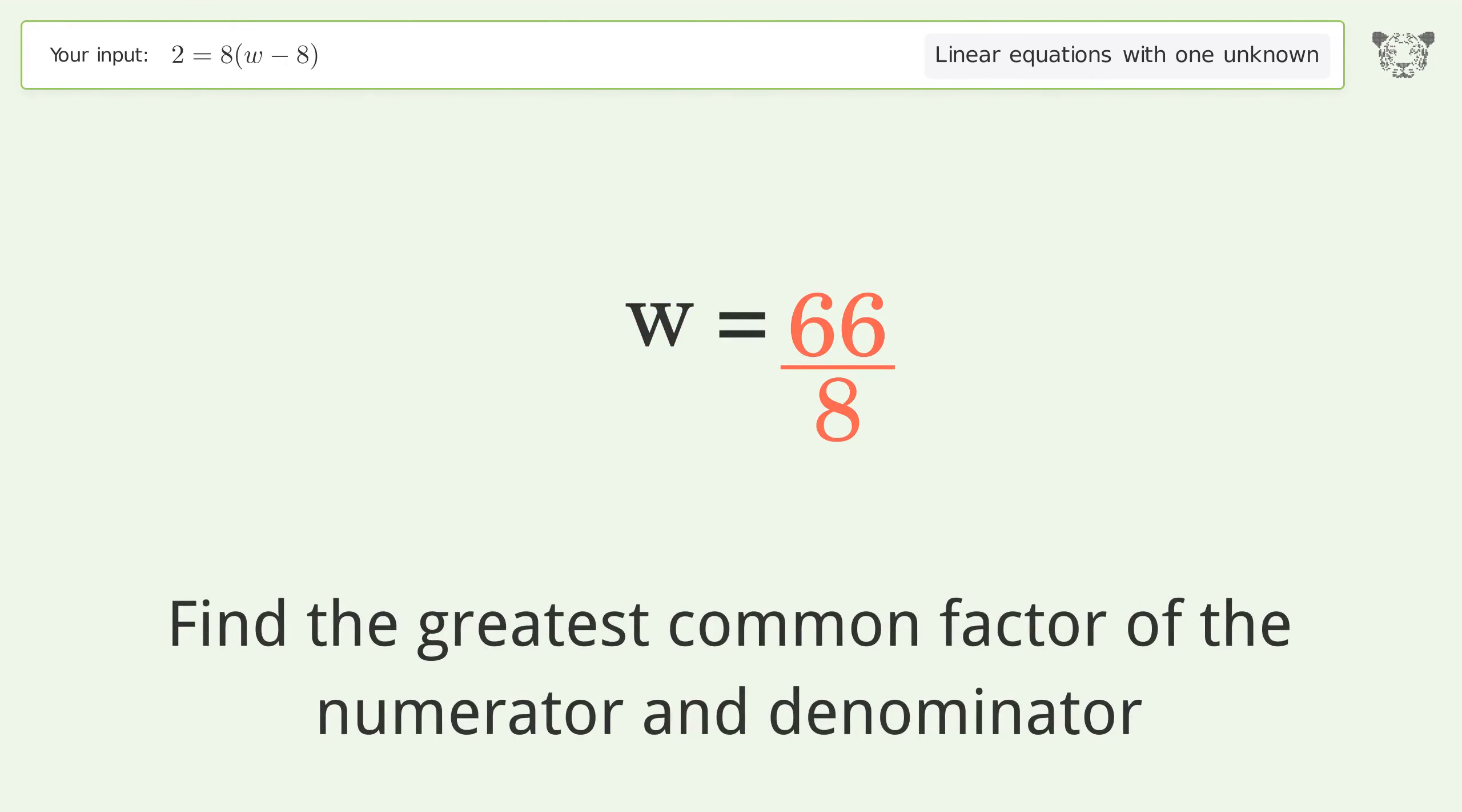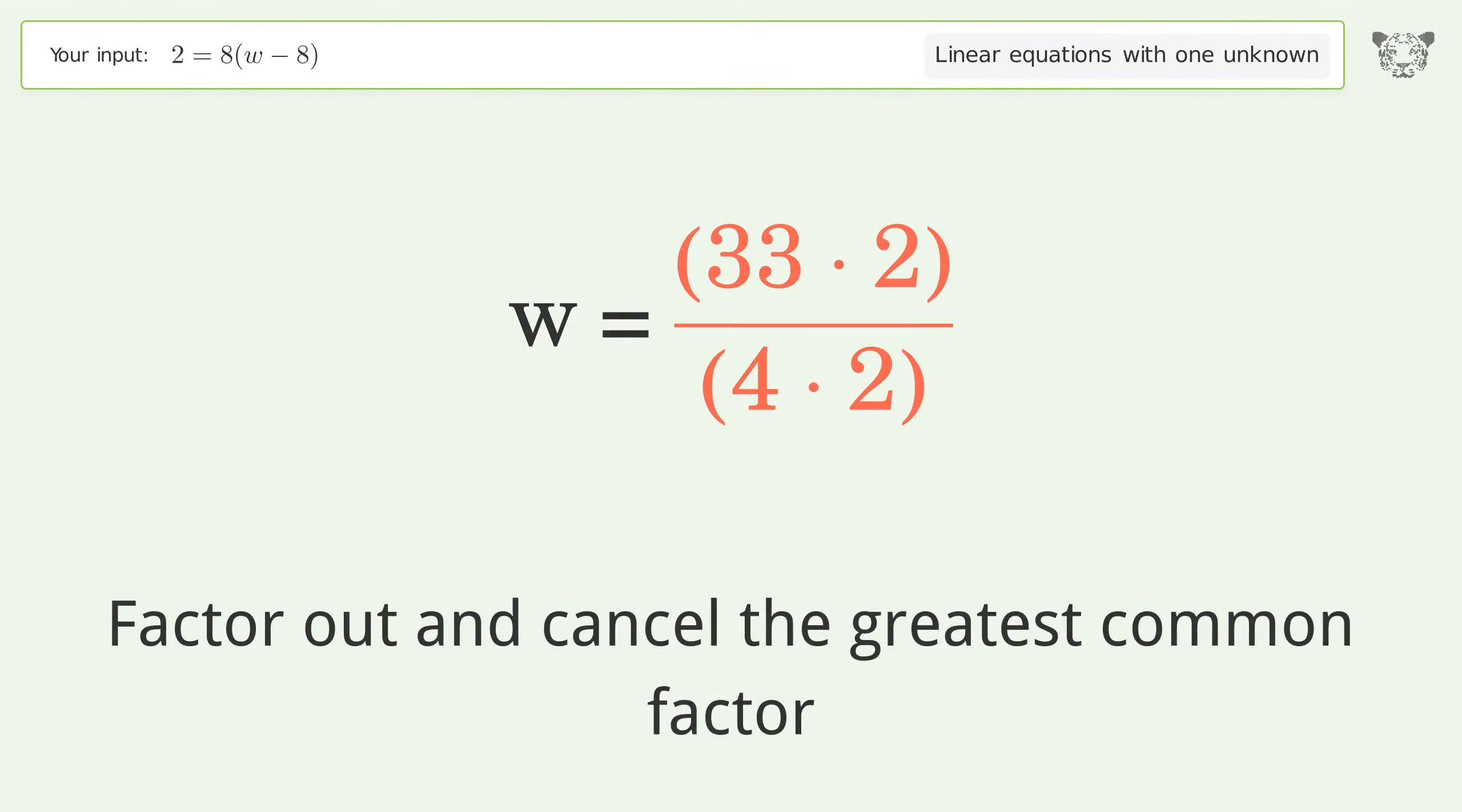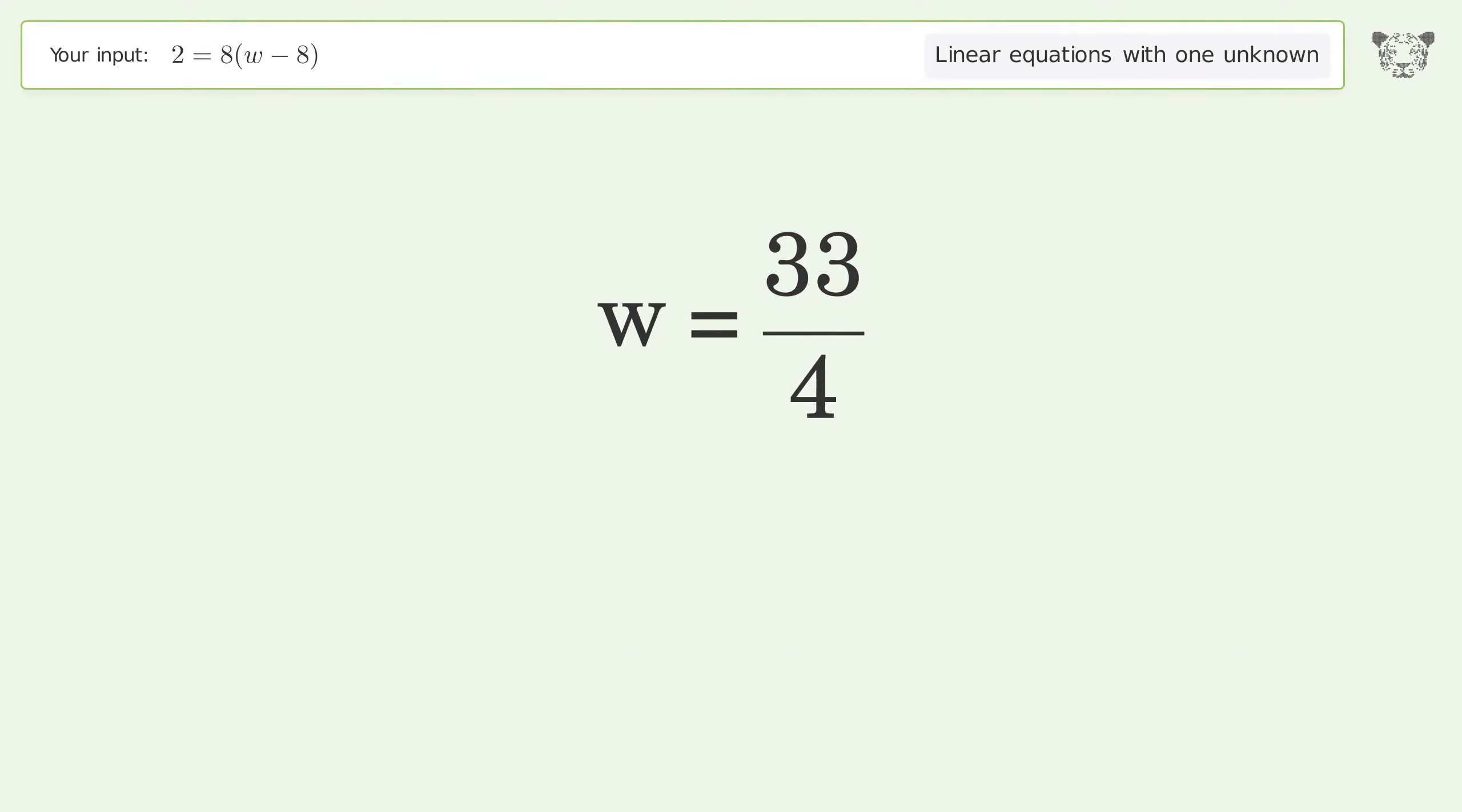Find the greatest common factor of the numerator and denominator. Factor out and cancel the greatest common factor. And so the final result is w equals 33 over 4.